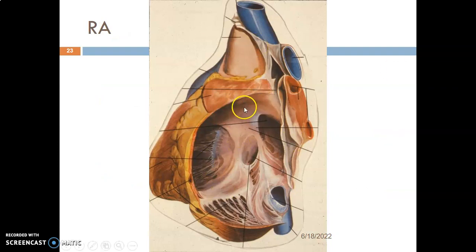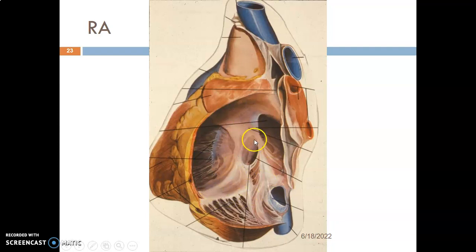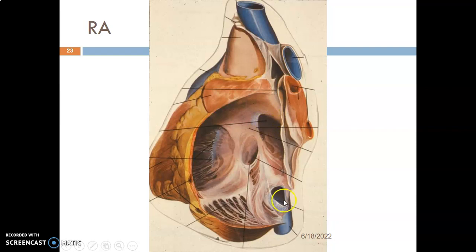Looking at the right atrium: if you cut the wall to examine the inner part, you will see a rough part made up of pectinate muscles and a smooth part — the sinus venarum — separated by the crista terminalis. You can also appreciate the fossa ovalis and its limbus. You can see the superior vena cava opening, the inferior vena cava with the Eustachian valve, and the coronary sinus with the Thebesian valve.